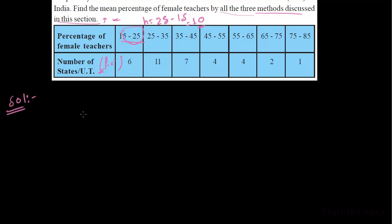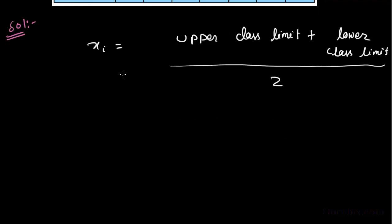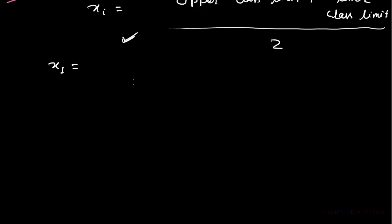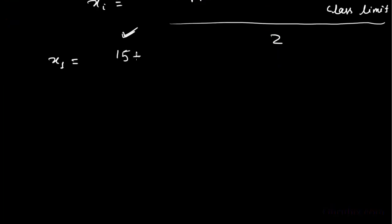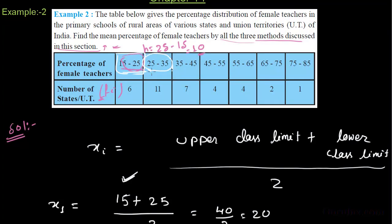First, we have to find xi. xi is equal to upper class limit plus lower class limit divided by 2. By the help of this formula, we can calculate the rest of xi. x1 is the class mark of the first interval. Our first interval is 15 to 25, so x1 is 15 plus 25 divided by 2, equal to 40 upon 2, equal to 20. Similarly, x2 is the class mark of the second interval, which is 25 to 35.